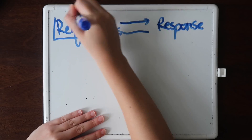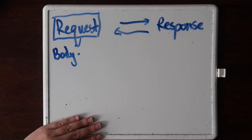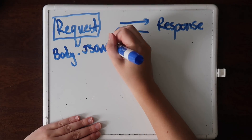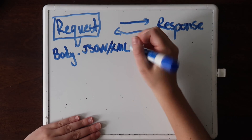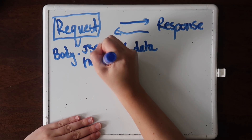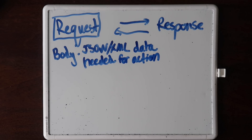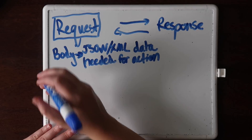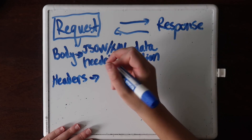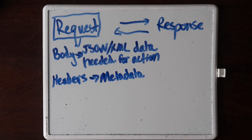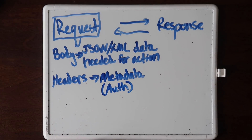This HTTP method will be a part of the request that the client sends to the server. There are also other components of that request — for example, the request body. The request body contains additional data that the client wants to send to the server, along with the request. This data could be in various formats such as JSON, XML, or form-encoded data. HTTP requests also include headers, which provide metadata about the request, such as the content type, authentication credentials, and any other relevant information.